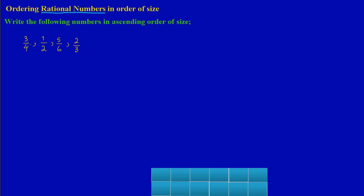Here I have three quarters, a half, five over six, and two-thirds. It is very hard to know which fraction is smallest, which is largest, or which would come next in that sequence. Since the denominators are different, in order to compare these fractions we must first find the LCD — the lowest common multiple — so that we can make accurate comparisons.